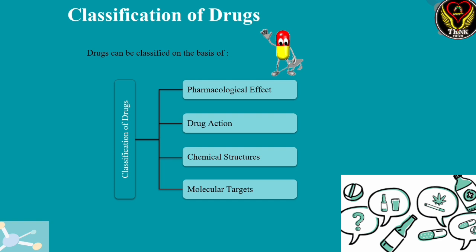Pharmacological effect: we say that a drug has an effect. Drug action means the drug has an effect on a specific process. The third is chemical structure — the drug has a structural effect. The fourth is molecular targets — drugs are classified based on their target.